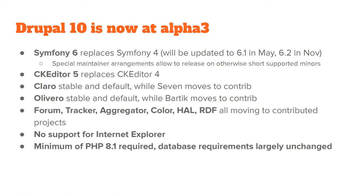In the alphas, we managed to get Symfony 6 in place of Symfony 4. This will be updated to Symfony 6.1 in May and to Symfony 6.2 in November before release. Normally we would not be able to release Drupal 10 on Symfony 6 because Symfony only supports their minor releases for six months. But we made a special agreement with the Symfony team — Drupal core committers sit on the Symfony security team and can backport security fixes to otherwise unsupported Symfony 6 minor releases. That's why we can release on Symfony 6 even though it's not long-term support.